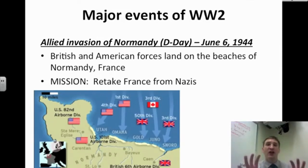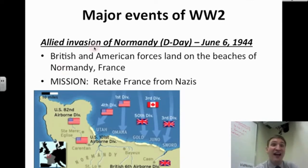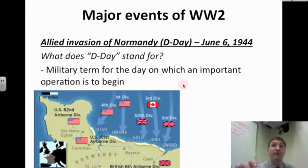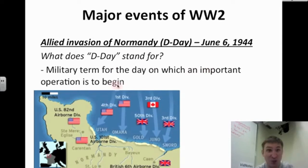America decides to focus most of its attention on the Nazis first, then Japan. The Allied invasion of Normandy, also called D-Day, happens on June 6th, 1944. British and American forces land on the beaches of Normandy, France. In this map, you see arrows pointing to where the Americans, British, and Canadians land across the English Channel. The mission is to retake France from the Nazis. D-Day is actually a military term for the day on which an important operation is to begin.